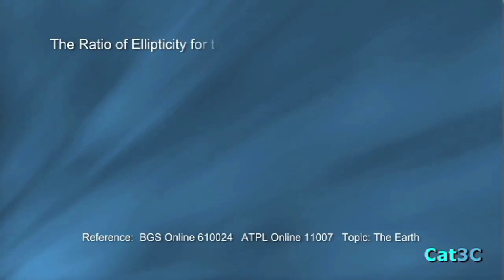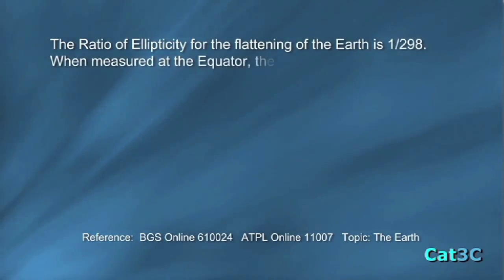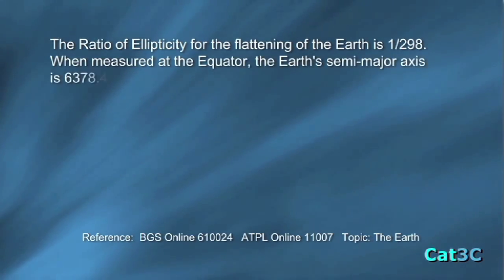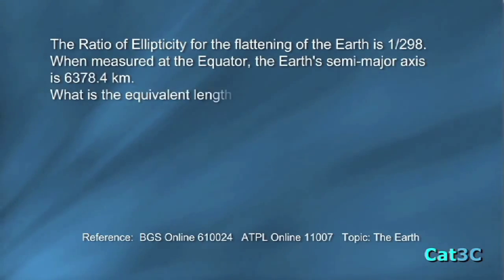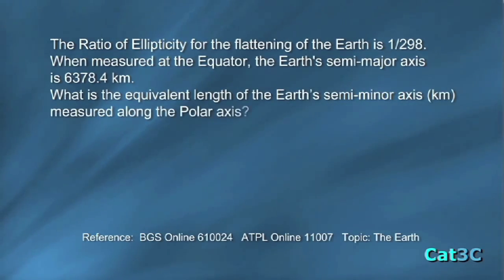The ratio of ellipticity for the flattening of the Earth is 1 over 298. When measured at the equator, the Earth's semi-major axis is 6,378.4 kilometres. What is the equivalent length of the Earth's semi-minor axis, again in kilometres, measured along the polar axis?